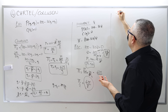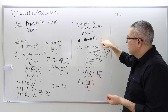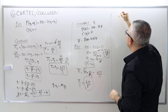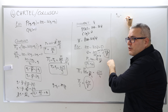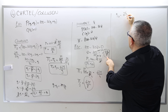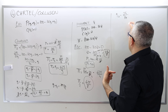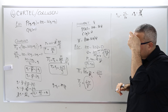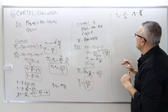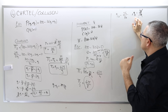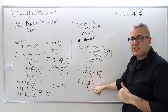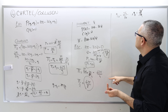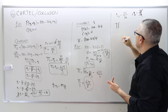Consider firm one. Suppose firm two sticks to the collusion scheme and produces half the monopoly output, 25/16. As firm one, I was supposed to produce the other half. But let's say I don't — I produce something else. Can I choose Q1 to earn a profit even higher than 625/8? Of course I can.